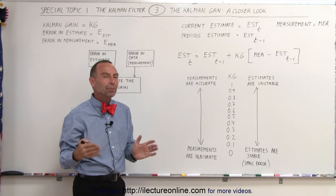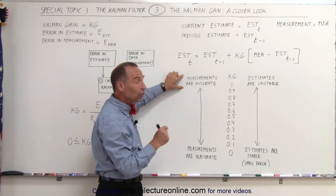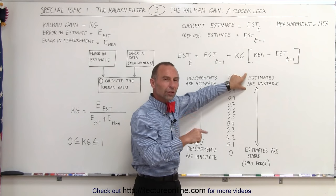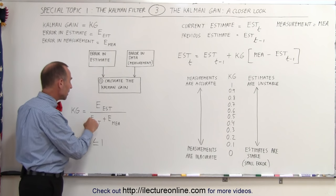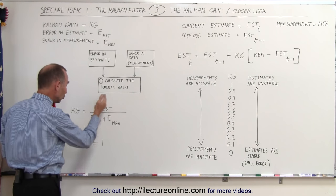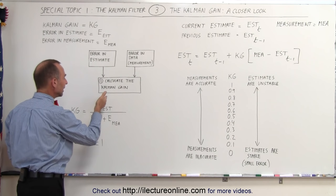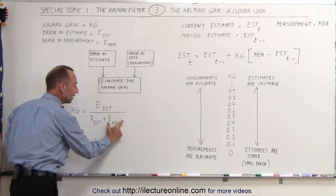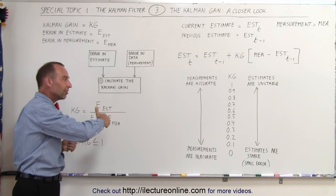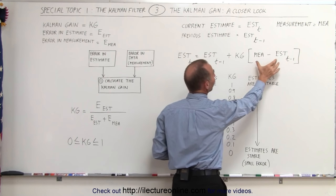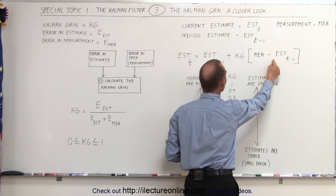How does the Kalman gain play a role? If the Kalman gain is large — close to 1 — that means that the measurements we're getting are fairly accurate and the estimates are unstable. The error in the estimates is large, and the measurements are accurate. So the ratio will be close to 1, since the error in the measurement is very small. In that case, we do want to contribute much of the update to the estimate from the measurement, so this difference gets multiplied by a large number and we take a big portion of the delta to update the estimate.